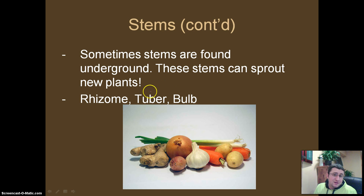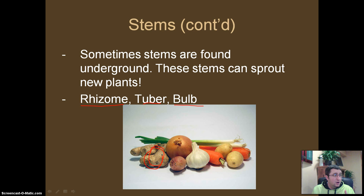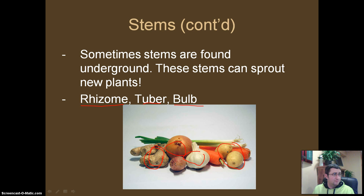Another cool thing about stems is that sometimes they can grow underground, and these stems are actually capable of producing a whole new plant. We can have a rhizome, a tuber, and a bulb — those are three types of stems that grow underground. You may have seen ginger before — that is a type of bulb, and so is garlic and onion. Potatoes are a type of tuber; those are actually stems of the plant that grow underground.